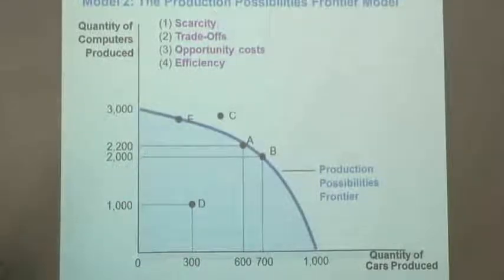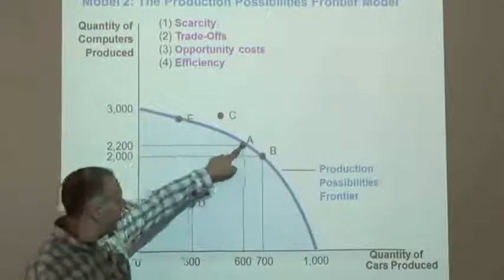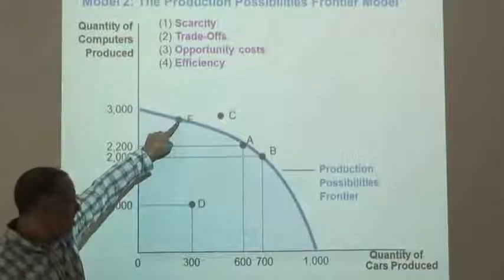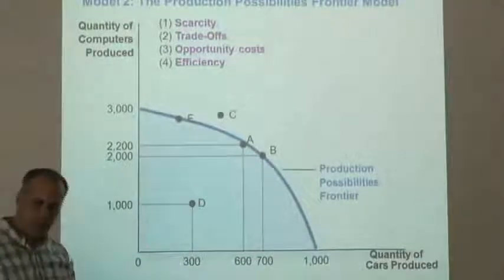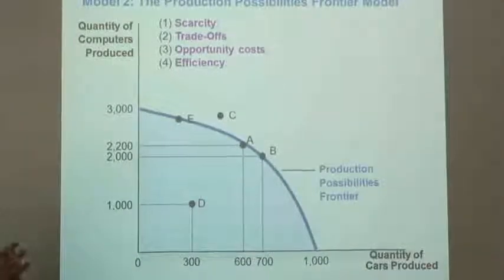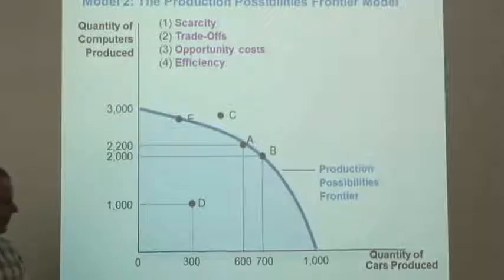And then efficiency. Efficiency says that if we're here, if we're at A or B or even E, we're producing efficiently. And we'll talk about that in a little more detail in a minute. Point D is someplace that's inefficient. It's possible, but it's inefficient.